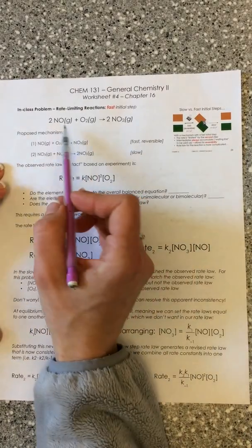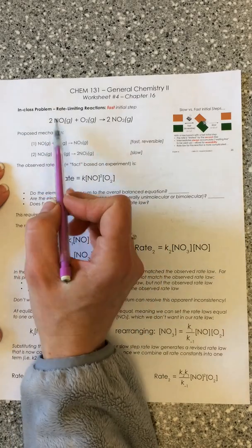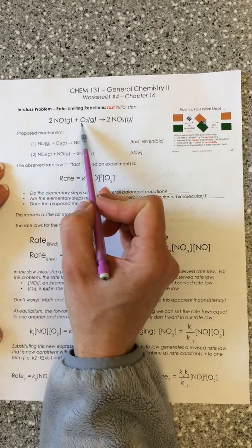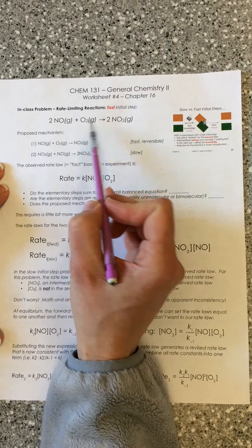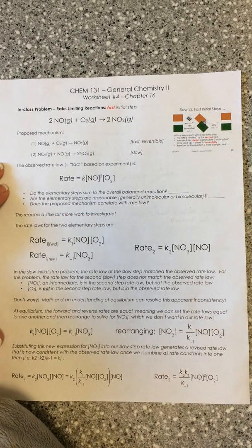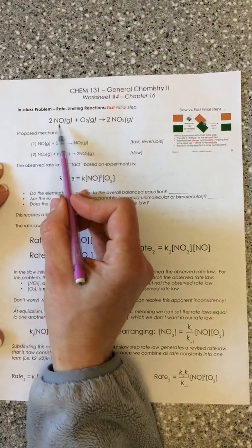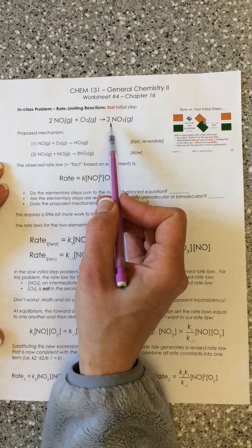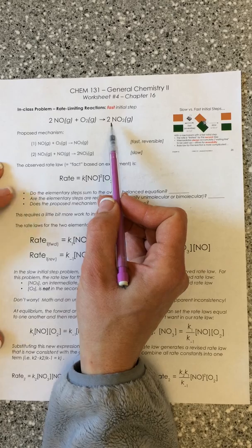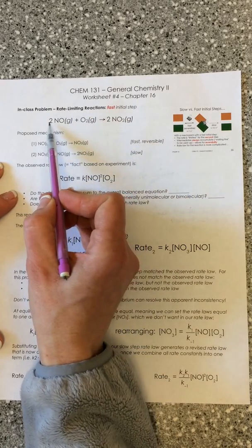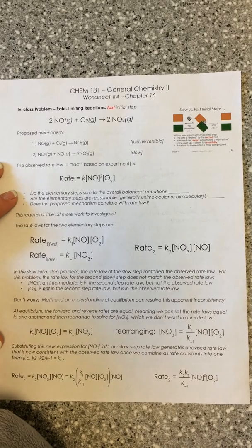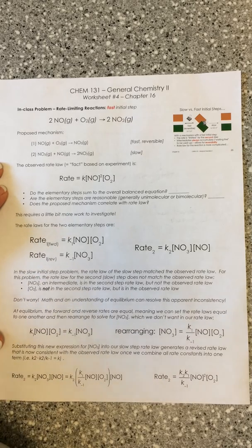As an example, we're going to run through the reaction that takes two molecules of NO, reacts them with a molecule of O2, and generates two molecules of NO2. Just by looking at this, we could make the initial assumption that this probably occurs via a multi-step reaction. Because if we consider this to be an elementary step, it would be termolecular, and it's not very common for three molecules to simultaneously come together. So that's a good indication this might occur via a multi-step mechanism.